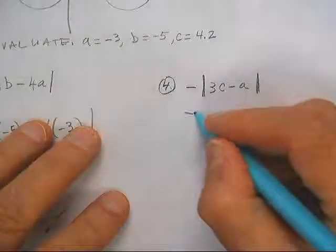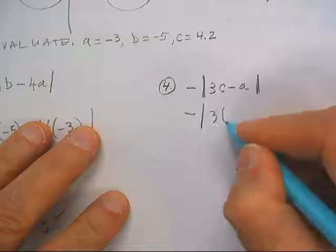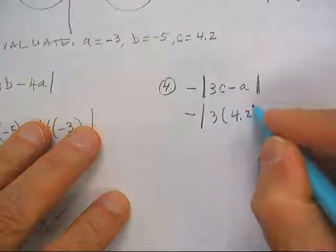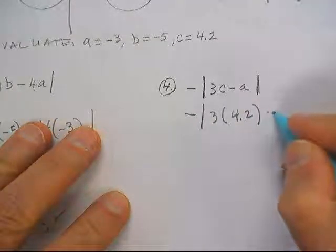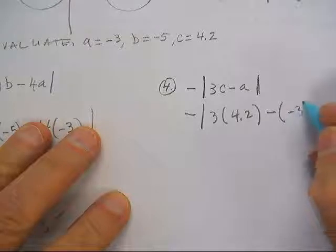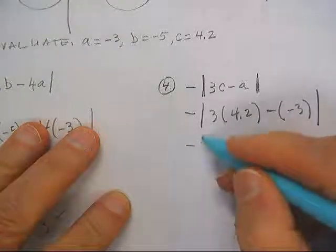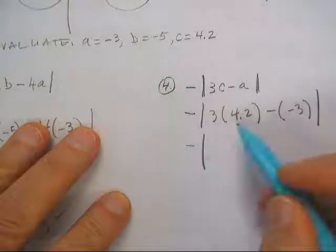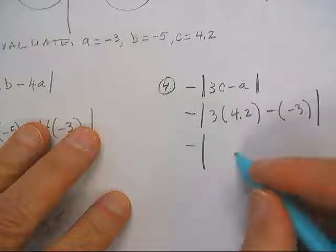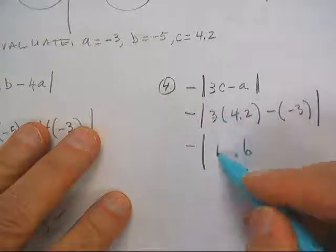Alright, this negative sign sure got omitted a lot. I don't know why — a is negative 3, so I've got a negative stuck right there. Let's see: 3 times 2 would be 6, 3 times 4 is...